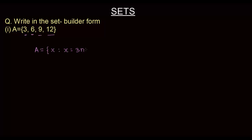Now there has to be a limit on this. This n has to be a natural number, so we write: x = 3n, and n belongs to the set of natural numbers, and n is less than or equal to 4. This is the set builder form derived from the given roster form.